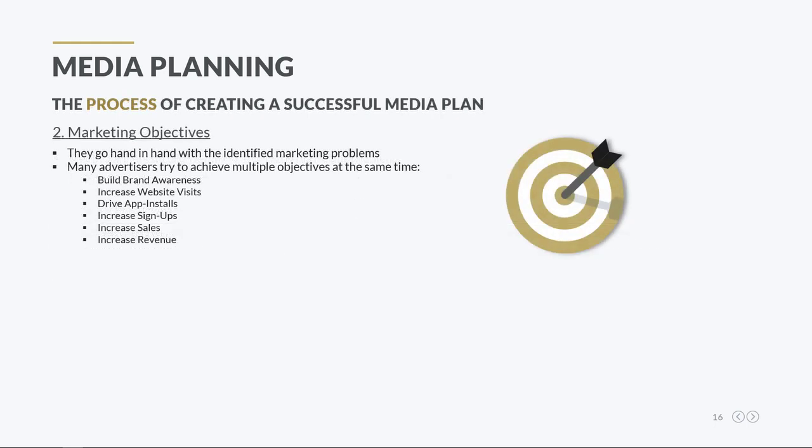Moving on to the marketing objectives, those go hand in hand with the identified marketing problems. For example, if there is not much product awareness, the marketing objective should be to build awareness through advertising campaigns. With programmatic advertising campaigns, advertisers can achieve many marketing objectives — they can build brand awareness, increase website visits, drive app installs, and increase sign-ups, sales, and revenue.